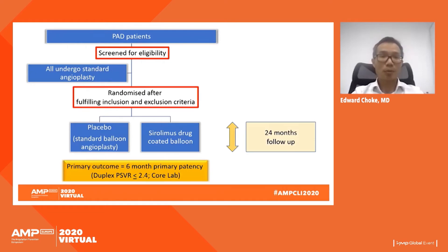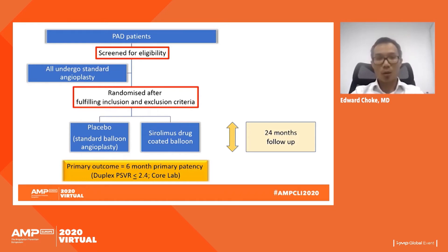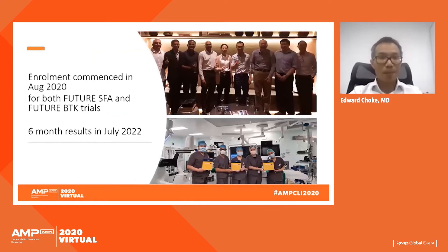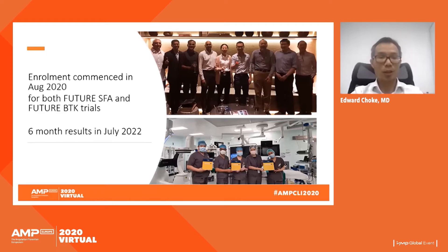PAD patients will be screened, consented, and undergo standard angioplasty. Only after fulfilling inclusion and exclusion criteria during the procedure will they be randomized to either placebo standard balloon angioplasty or the sirolimus-coated balloon. All patients will be followed for 24 months. The primary outcome is six-month primary patency defined as duplex peak systolic velocity ratio ≤2.4, CoreLab-adjudicated in a blinded and independent fashion. Enrollment commenced August 2020, with six-month results expected by July 2022.